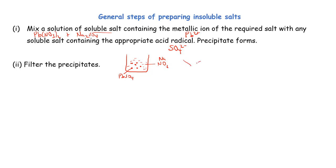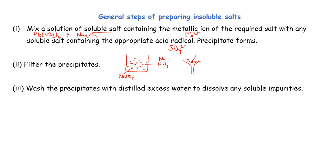Step two: filter the precipitate. Place filter paper in a filter funnel and filter the mixture so that the precipitate becomes the residue — it will not pass through the filter paper. Then wash the precipitate or residue with distilled water to dissolve any soluble impurities that may remain behind with the precipitate, improving the purity of our salt.